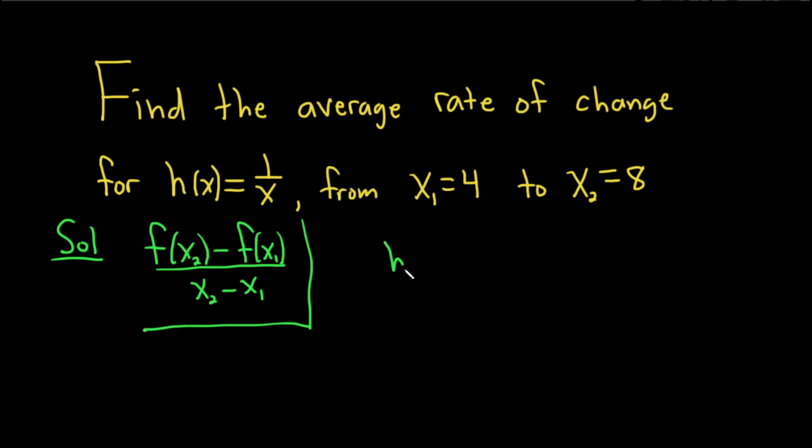So this will be h of x2, which in our case is 8, and then minus h of x1, which in our case is 4. Over x2 minus x1, so that's 8 minus 4.